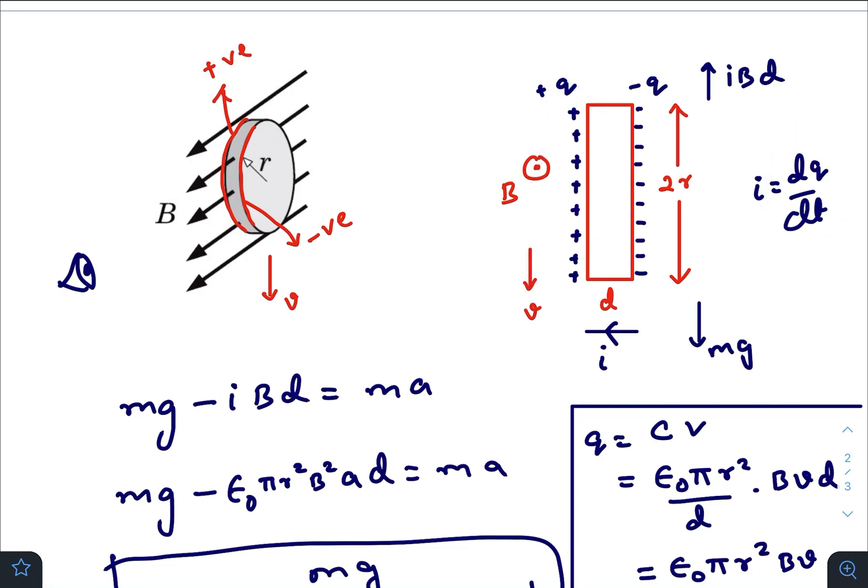And now that, as it is a current carrying conductor and in presence of a magnetic field, it will also feel a force. And that force would satisfy the formula I L cross B, where L vector is in this direction, length of the conductor, and B is here.